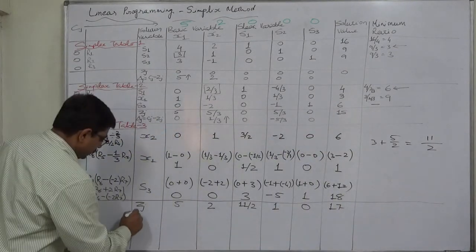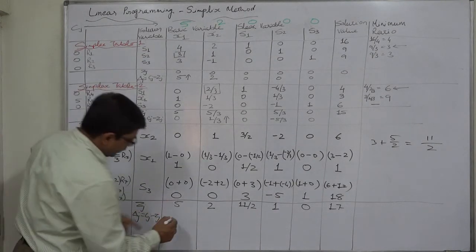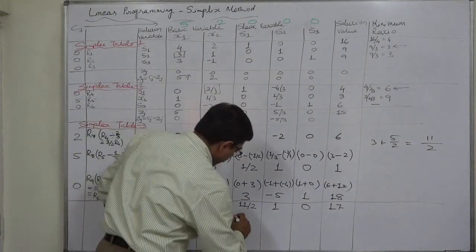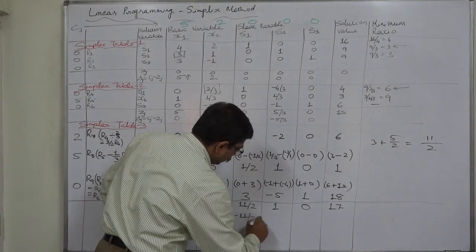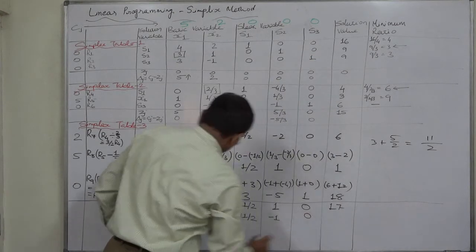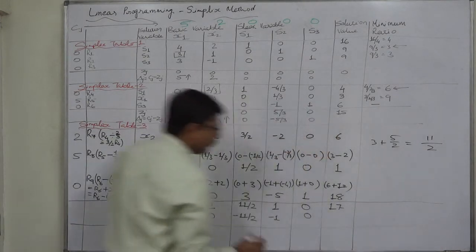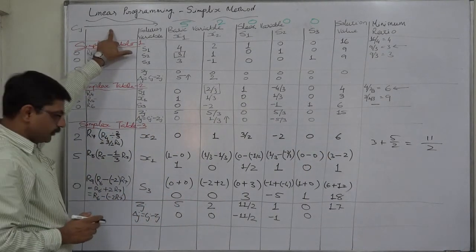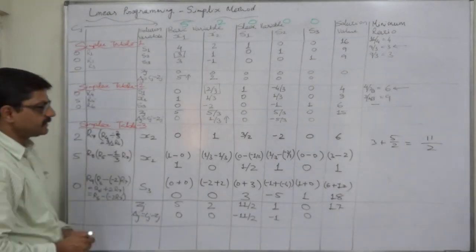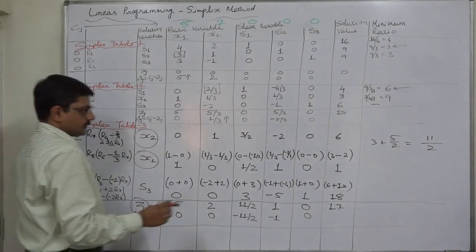Now it is the turn of Delta j, that is Cj minus Zj. For X1: 5 − 5 = 0. For X2: 2 − 2 = 0. For the next column: 0 − 11/2 = −11/2. Then: 0 − 1 = −1. And: 0 − 0 = 0. We can see that all the Delta j values are 0 or negative. Since this is a maximization problem and all Delta values are 0 or negative, this is the optimal solution.